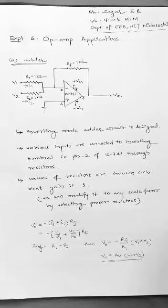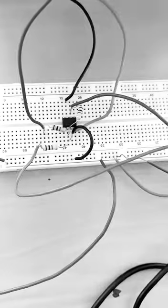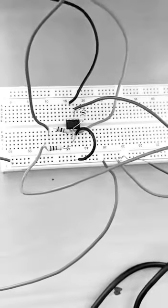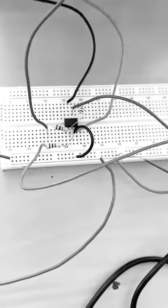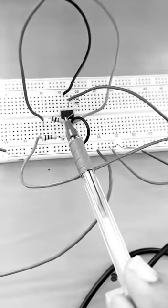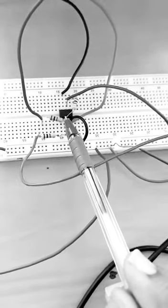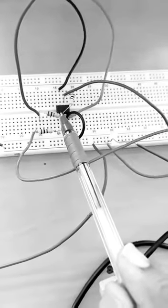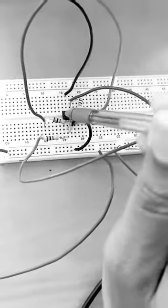Now, we will connect this circuit on the breadboard and we will check for the outputs. So this is the breadboard connection. I will just show you how this is connected. We have used an IC741, that is an op-amp which has 8 pins.